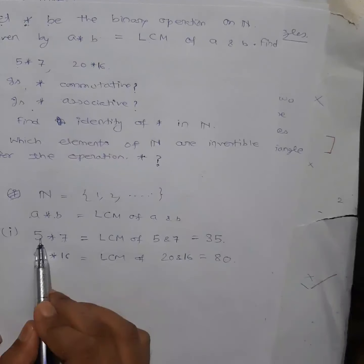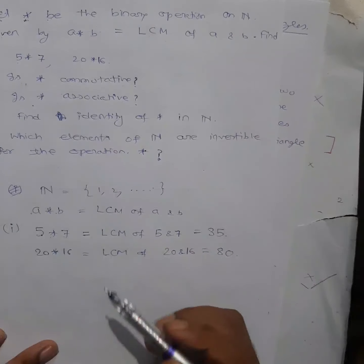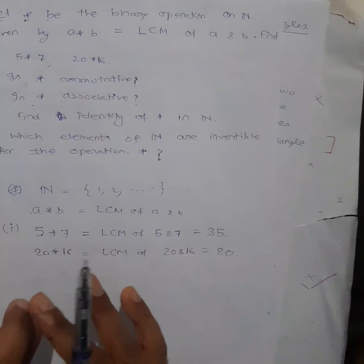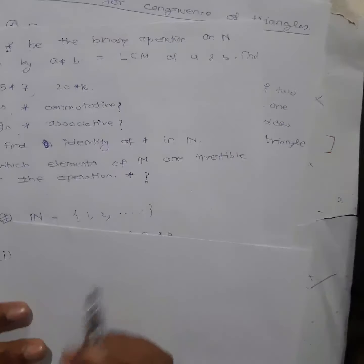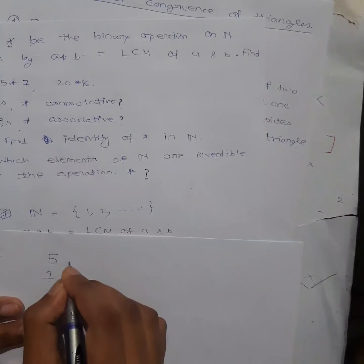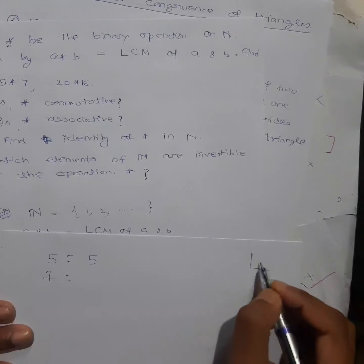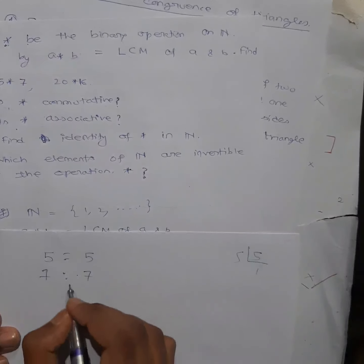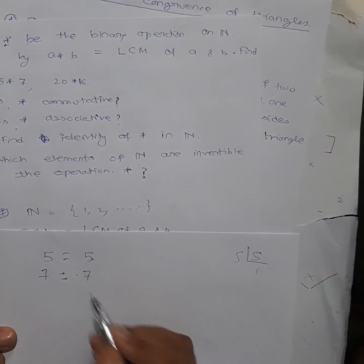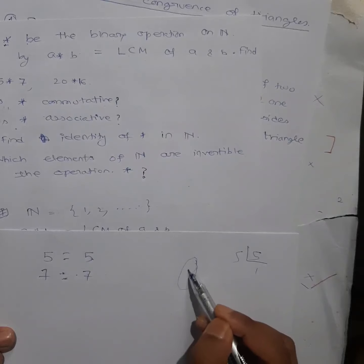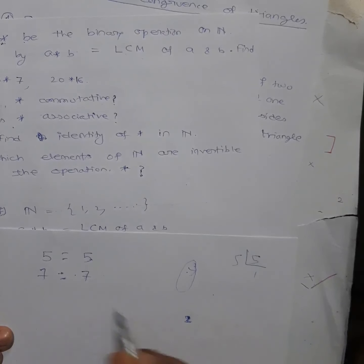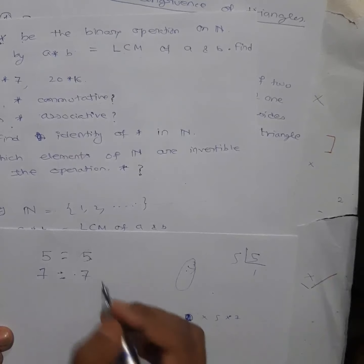We used to find the prime factorization of the numbers. Then we find the common elements, and whatever common elements are there we take them as one element. Then the rest — the uncommon elements — we simply multiply. Like for example, prime factorization of 5 is 5×1, and 7 is 7×1. For odd numbers obviously it's simple multiplication. Anyway, there is no common element between 5 and 7. So 5 and 7 are uncommon — we simply multiply.